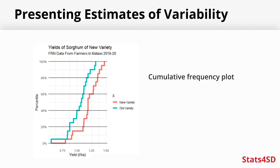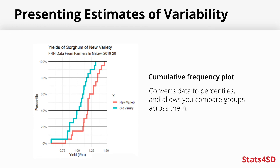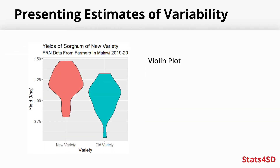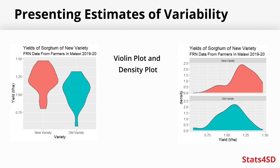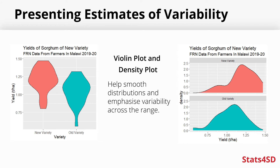Cumulative frequency plots convert your data to centiles, and are very useful for comparing across the range of values to see how different groups are behaving at the lower, middle, and top end. Then there are more interpolated plots like a violin plot, which is essentially a density plot mirrored and flipped. These can help smooth out a spiky histogram or box plot, emphasising the variability across the range. All of these are good options and communicate variability — how much there is and how it varies across groups — much better than thinking about standard deviations or other summary statistics.